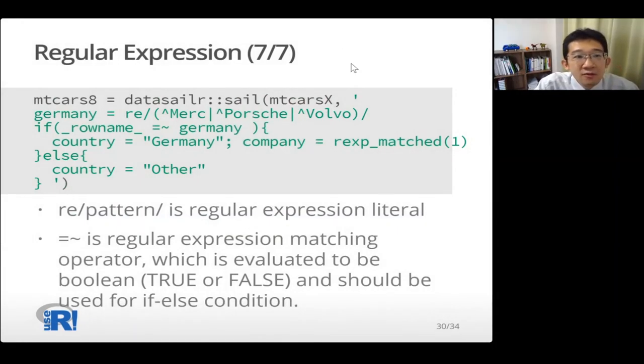And lastly, regular expression. This is a really powerful feature. Regular expression can be written like this: re, slash, pattern, and slash. This is a regular expression literal in Sailr script. And also equal tilde is regular expression matching operator, which evaluates to Boolean and should be used for if-else condition. So in this case, I'm creating a new regular expression pattern and it's assigned to germany variable. And germany variable representing this regular expression is matched against row name.